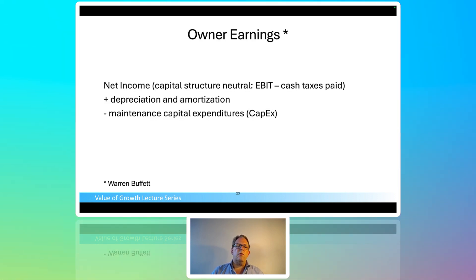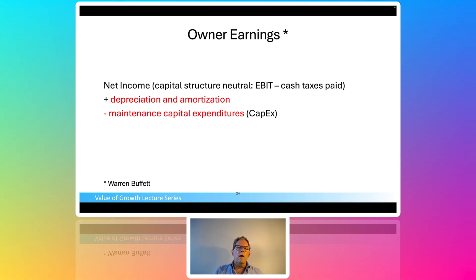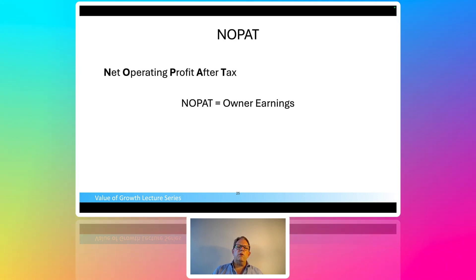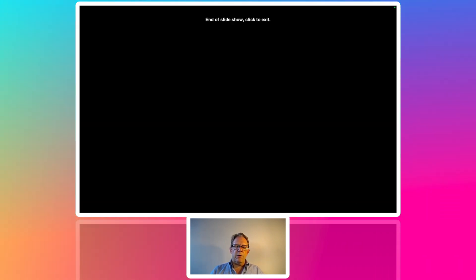Getting back to owner earnings — we just talked about this. You can approach it another way: EBIT minus cash taxes paid, or starting with net income, adding back depreciation and amortization. There are lots of ways to get to it, and when you see the models we use, it'll be very straightforward. NOPAT equals owner earnings — that's going to be our definition for all the valuation discussions going forward. Thank you very much for watching.